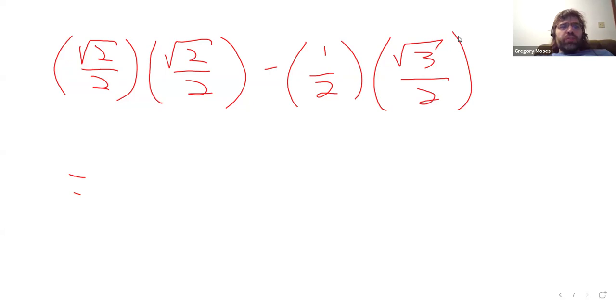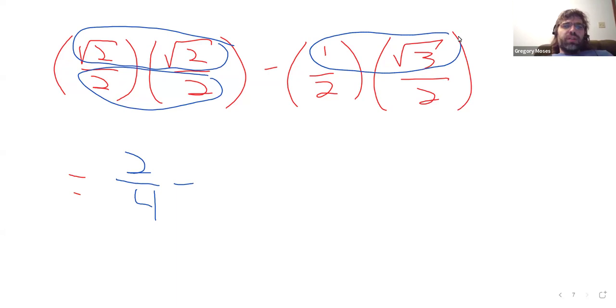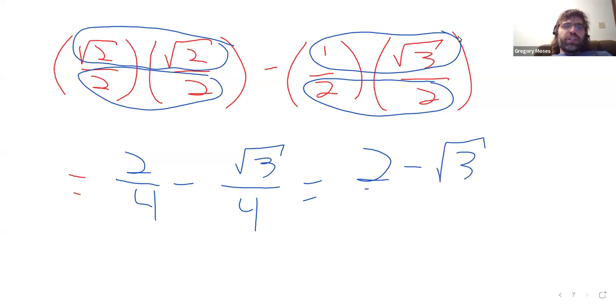So the square root of 2 times the square root of 2, this multiplication. That's 2. Then 2 times 2 is 4 minus the square root of 3 divided by 4. 2 minus the square root of 3 over 4.